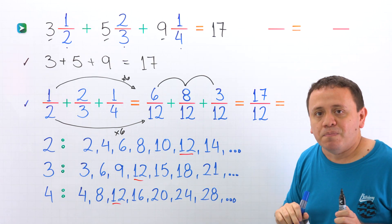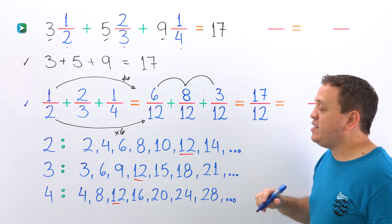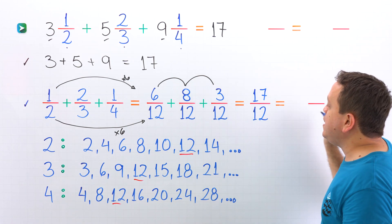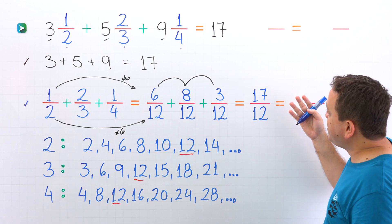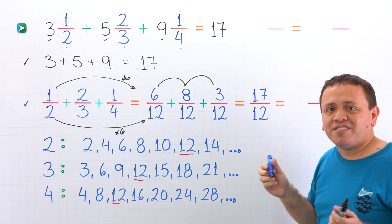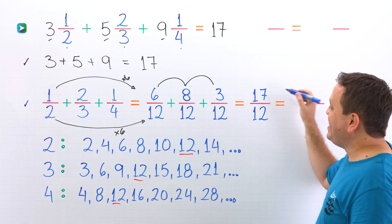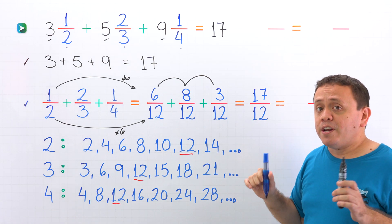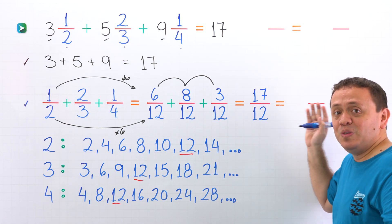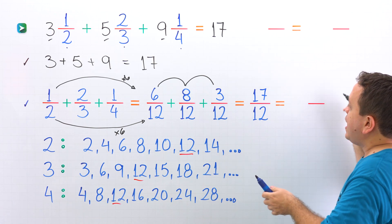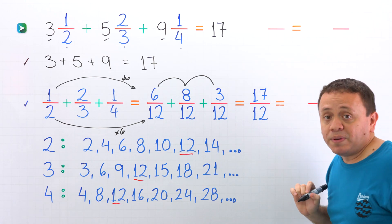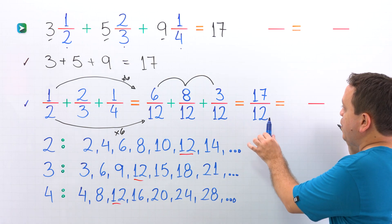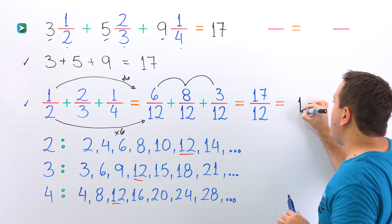At this point, we should remember improper fractions. An improper fraction is a fraction where the numerator, the top number, is greater than or equal to the denominator, the bottom number. Seventeen twelfths is an improper fraction, given that the numerator seventeen is greater than the denominator twelve. Since we don't want an improper fraction in the final answer, we need to convert it. How many times does twelve go into seventeen? Twelve goes into seventeen one time.